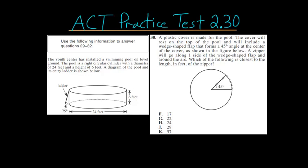For the 30th problem on the second ACT practice test, a plastic cover is made for the pool. The cover will rest on top of the pool and will include a wedge-shaped flap that forms a 45 degree angle at the center of the cover, as shown in the figure below. A zipper will go along one side of the wedge-shaped flap and around the arc. Which of the following is closest to the length in feet of the zipper?